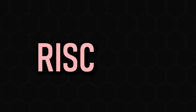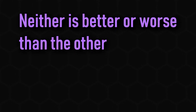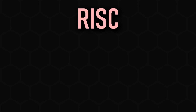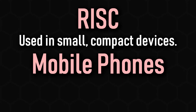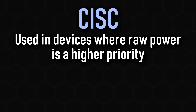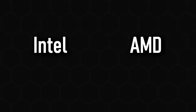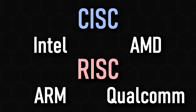The RISC vs CISC debate has never really been a competition, as it isn't a case of which one you should buy over the other — both have a field in which they are the dominant CPU type to use. RISC CPUs are typically used in small, compact devices such as mobile phones and tablets, while CISC is the usual go-to for servers, desktops, and laptops. AMD and Intel usually produce CISC, while Qualcomm and ARM are known for RISC.